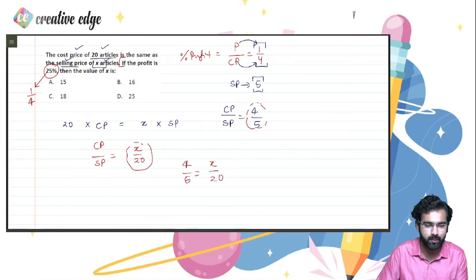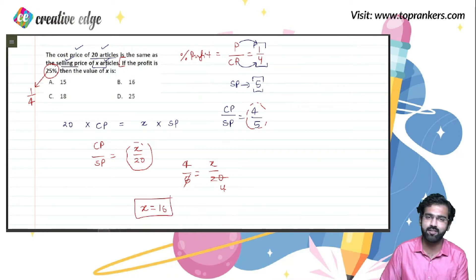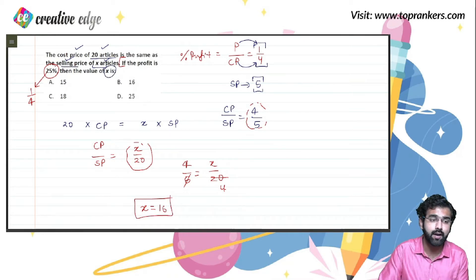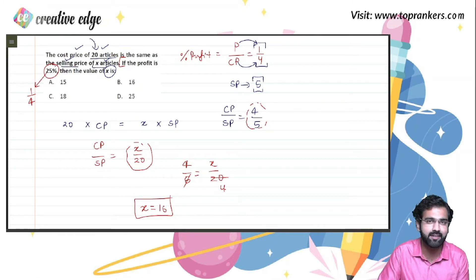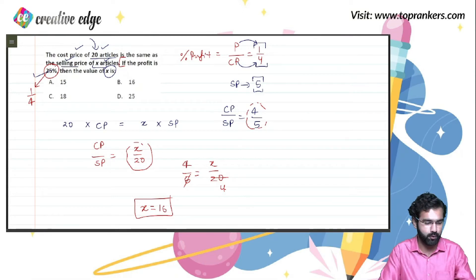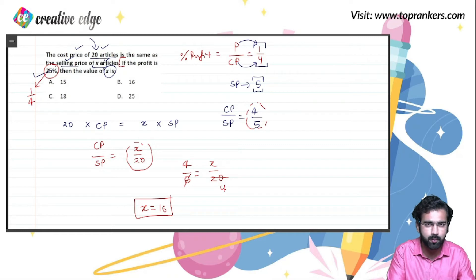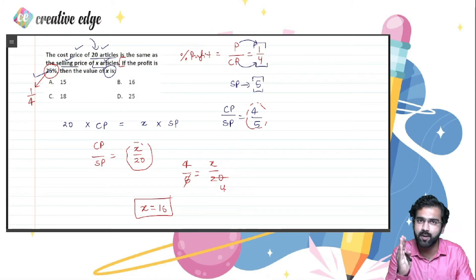5 times 4 is 20 and 4 times 4 is clearly 16, so X turns out to be 16. The significance of this 16 is that if the cost price of 20 articles is set equal to the selling price of 16 articles, then definitely there will be a 25% profit. You can very easily crack all the questions on profit and loss as soon as you are able to crack the ratio relationship between cost price and the selling price.